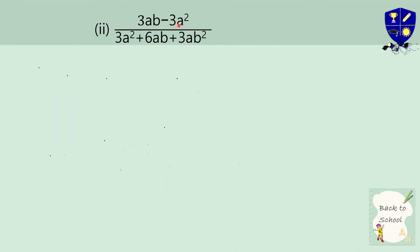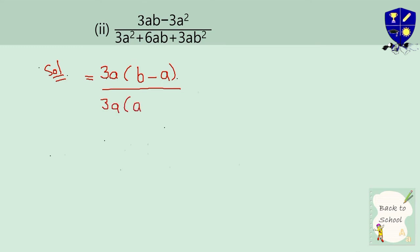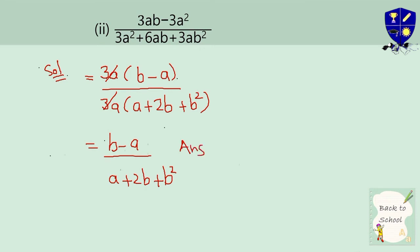Question number 2: the numerator is 3ab minus 3a squared; remove common factor 3a to get 3a(b minus a). In the denominator, remove common to get (a plus 2b). Cancel the common 3a factor. The answer is: (b minus a) divided by (a plus 2b plus b squared). This is the final answer as it cannot be simplified further.